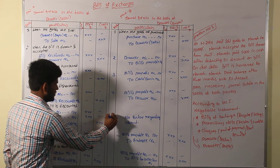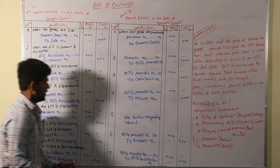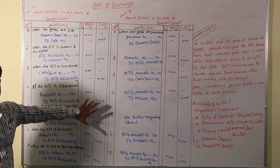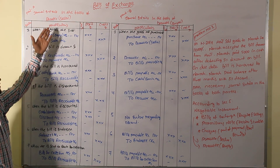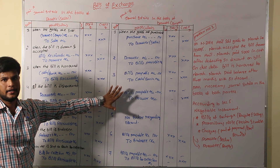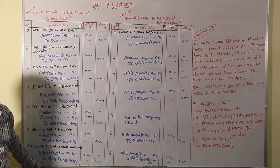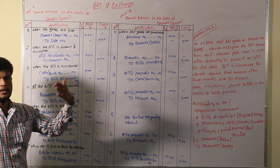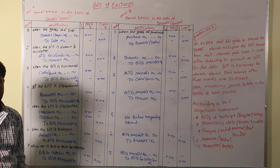These are the basic entries regarding bills of exchange. There are only 7 entries in the books of the seller and buyer combined — we have 13 entries total, and just now we covered 7 entries regarding the first problem. In many entries, we are going to solve based on the problems in the second and third problems.